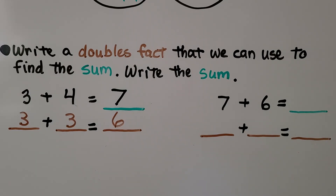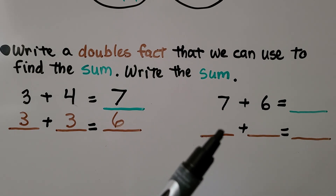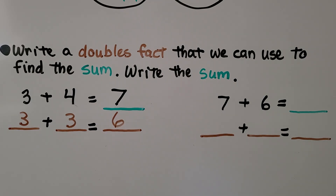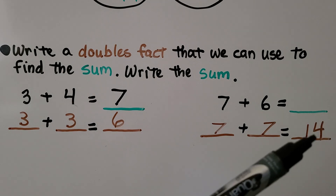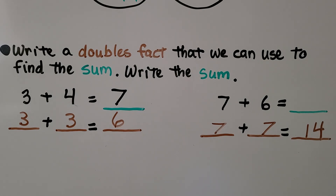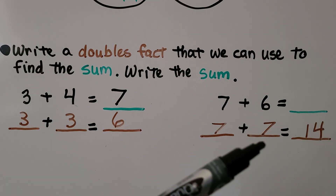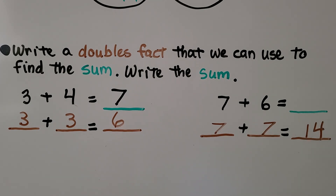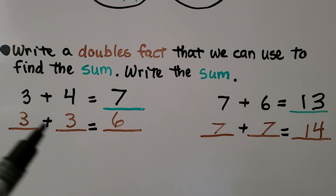For 7 plus 6, we can use 7 plus 7, which equals 14. Because 6 is one less than 7, we take away one from the doubles fact: 14 minus 1 equals 13. So 7 plus 6 is 13. We also could have used 6 plus 6 plus 1 more to get 13. We could also have used 4 plus 4 is 8 and took away one for a related example.